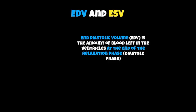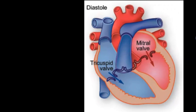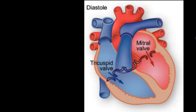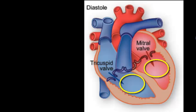We also need to understand the concept of EDV and ESV because it helps calculate stroke volume. EDV stands for End Diastolic Volume — essentially the amount of blood left in the ventricles at the end of the relaxation phase, or the diastole phase. As you can see in the picture, during the diastole phase the two atria fill up with blood, and there's a small amount of blood dripping into the ventricles — that's End Diastolic Volume. You are measuring any blood that's in the ventricles, not what's in the atria.